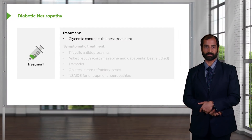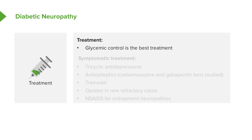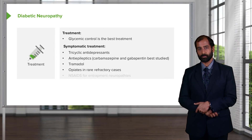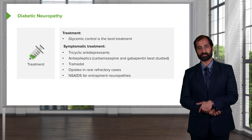Management of diabetic neuropathy: the most important thing is glycemic control — lifestyle modification, weight loss, and dietary changes. For symptomatic management, use tricyclic antidepressants, antiepileptics such as carbamazepine and gabapentin — carbamazepine was first-line for trigeminal neuralgia and helps with neuropathies. Tramadol or opioids may be used for refractory cases where pain is intolerable, though opioids carry significant risk. NSAIDs may also be used for intractable neuropathic pain.